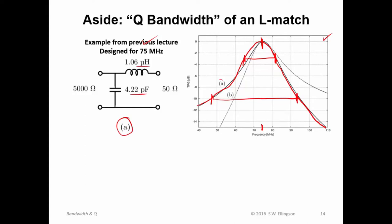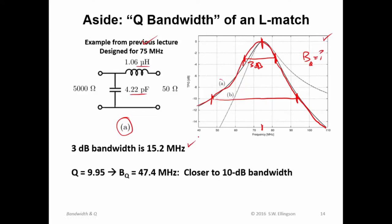Well, the 3 dB bandwidth here is 15.2 megahertz. That's what I measure. The Q is 9.95. So B sub Q, using the expression that I've derived already, just a little bit earlier in this lecture, is 47.4 megahertz. So that's quite a bit larger than 15.2 megahertz. In fact, it's closer to the 10 dB bandwidth. So we see that B sub Q is not necessarily related to half power bandwidth.